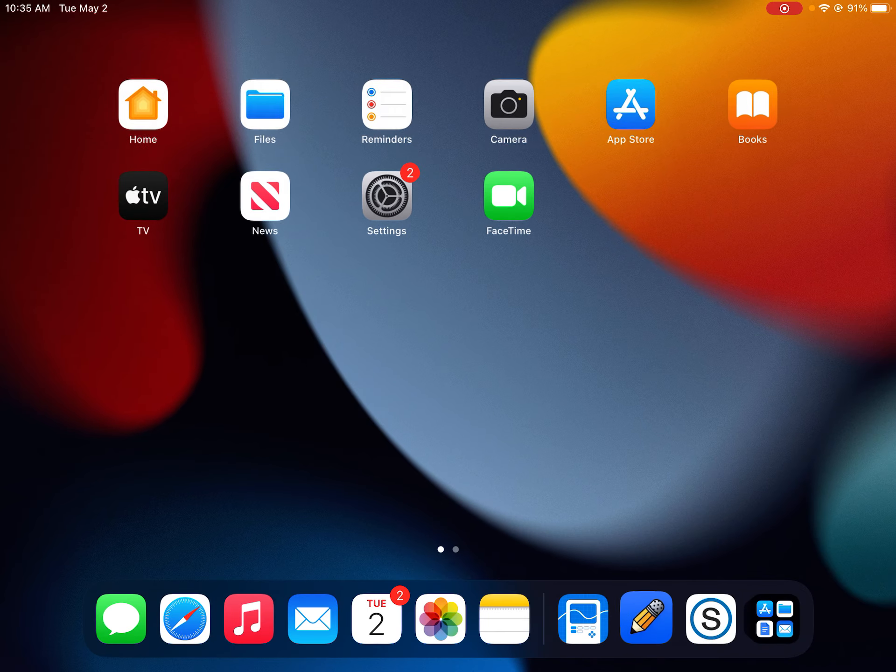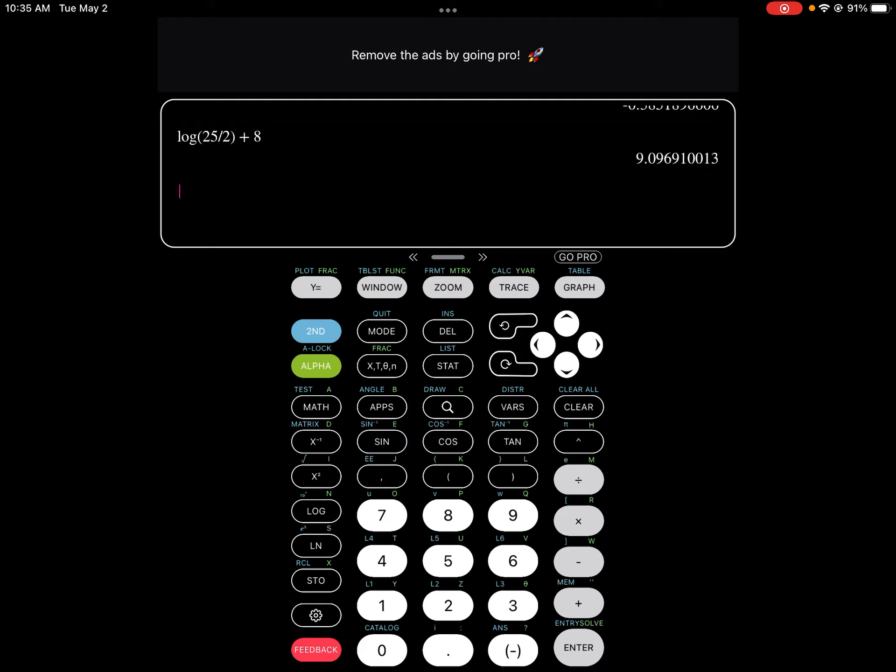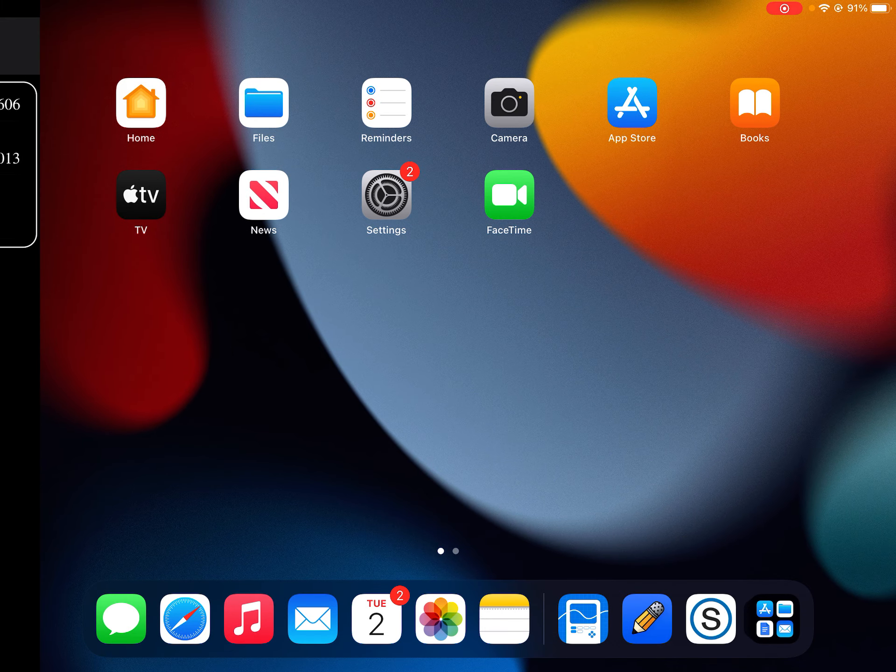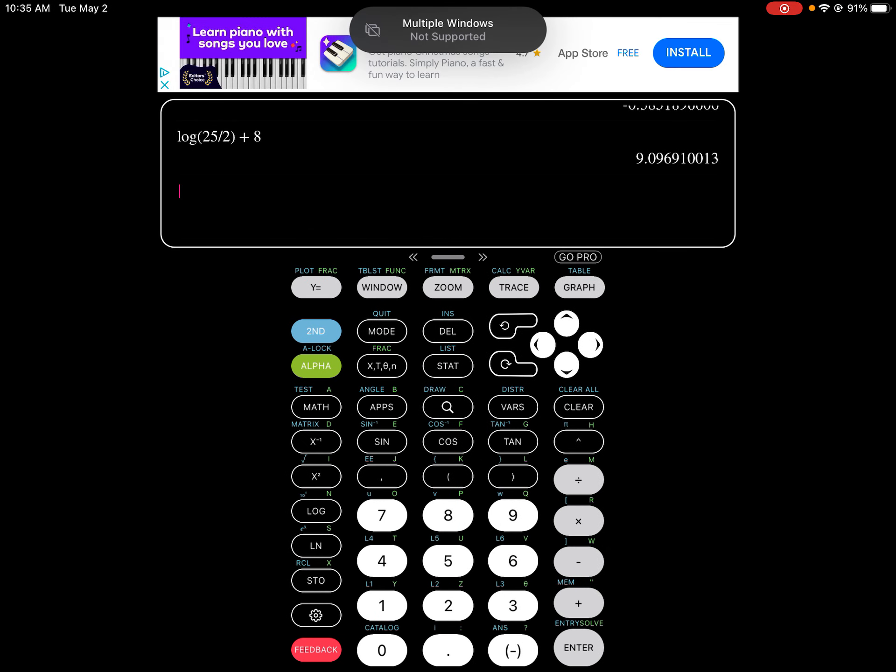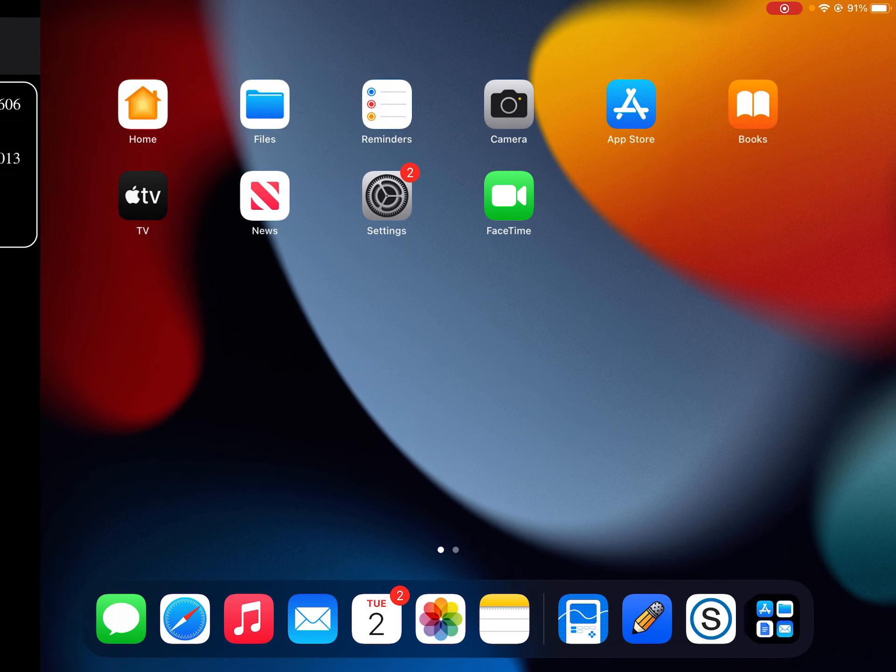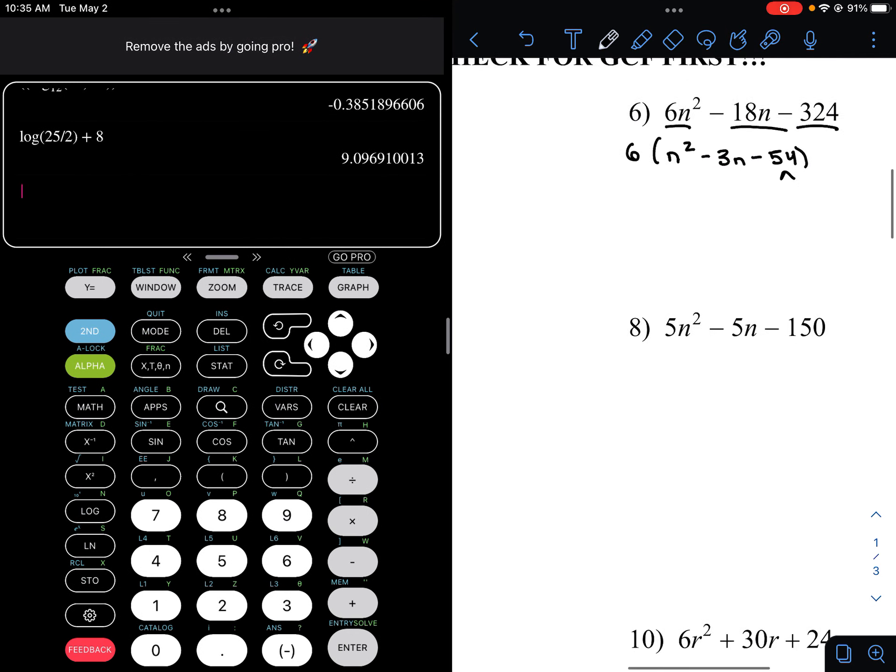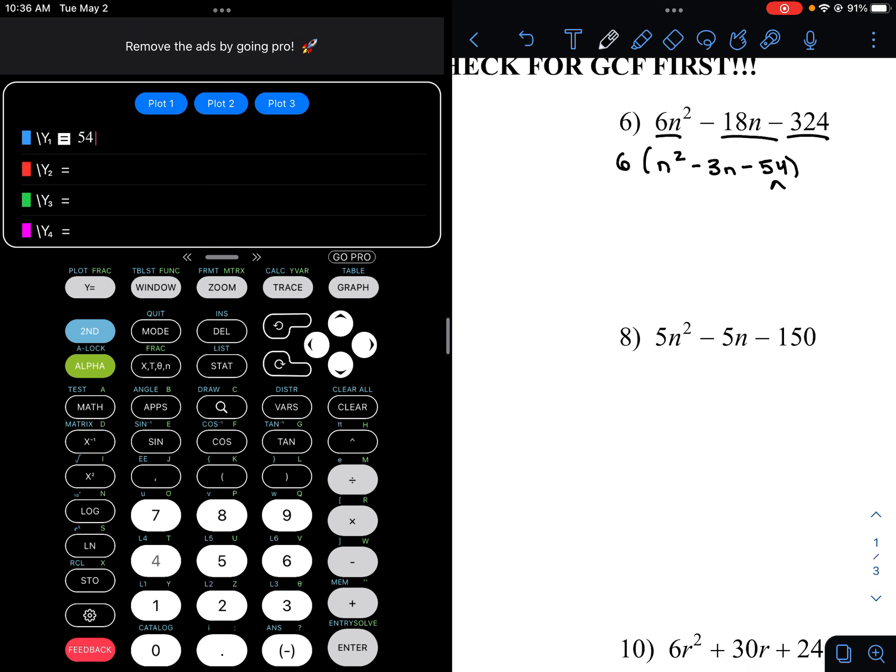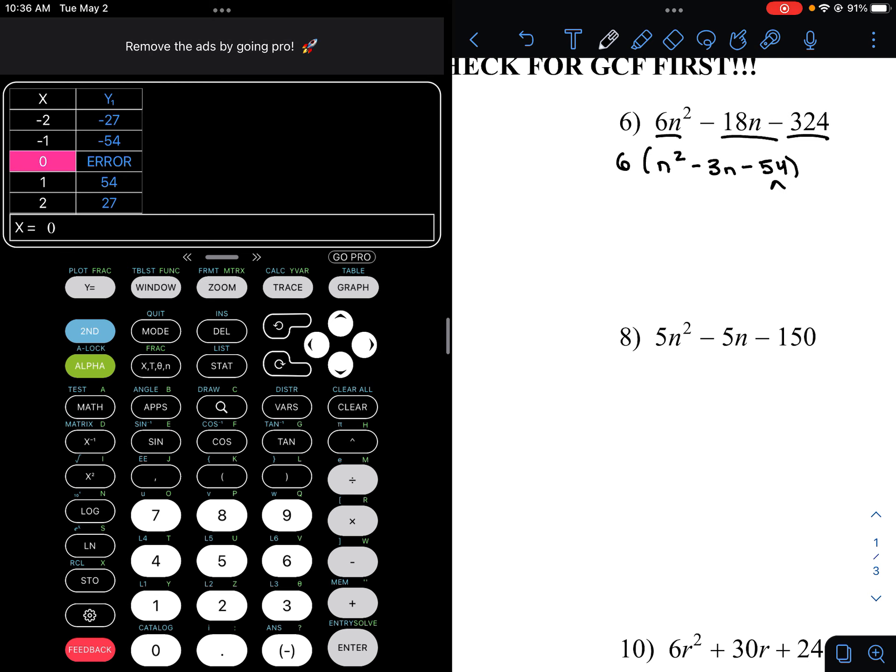Let me show you a little trick in a graphing calculator how to find the factors of a number. So maybe you're saying, Mr. D, I don't know all of my factors. Well, this should help here. What I'm going to do is go under Y equals, and I'm going to list 54, and I'm going to divide that by X. Now, if you go to the table, second graph. So again, I did 54 divided by X under Y equals, and then I go to the table.